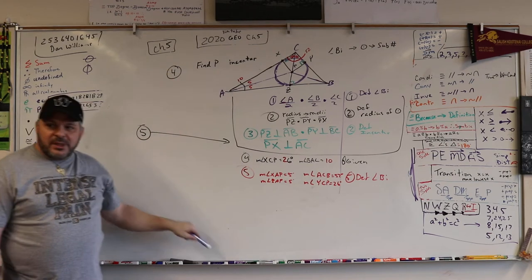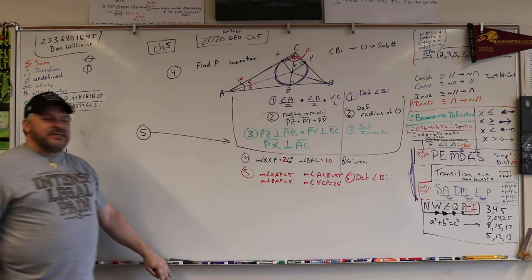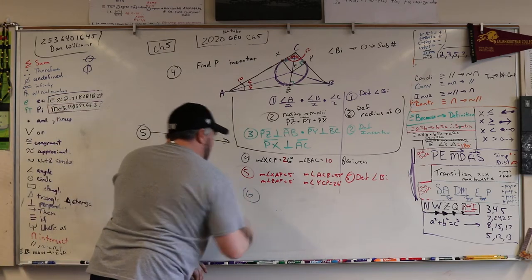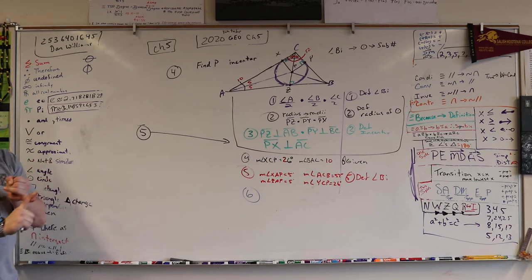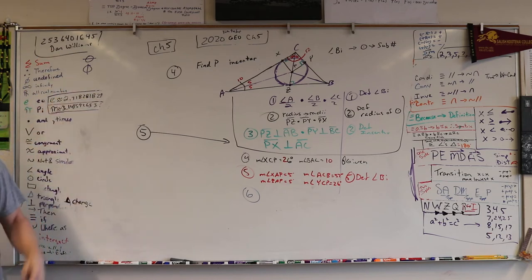Let's do that in blue. What's the big angle missing? The big angle. We have BAC, we have ACB. We don't have CBA or ABC, however you want to write it.